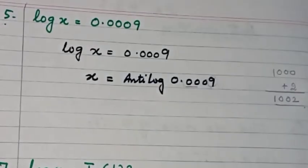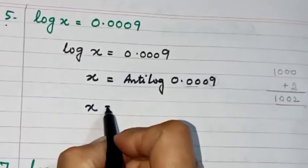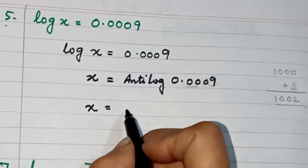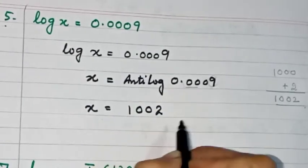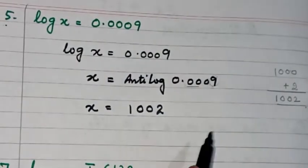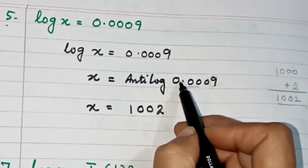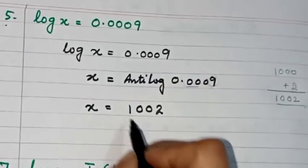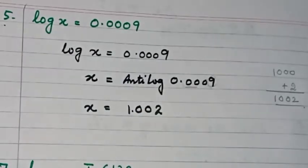So we write x equals 1002. The characteristic is 0, so we add 1 to get 1. We place the decimal after 1 digit from the left-hand side. The answer is 1.002.